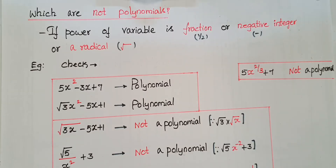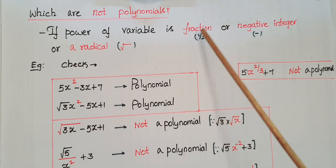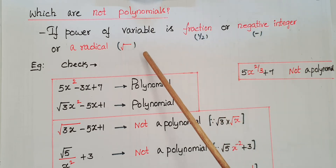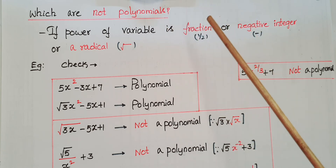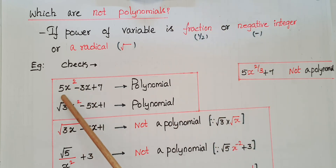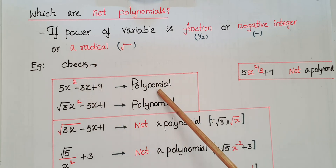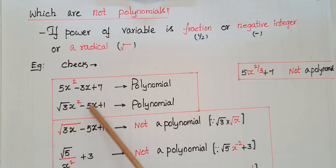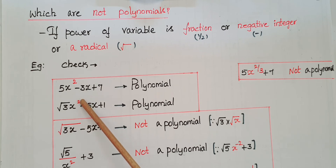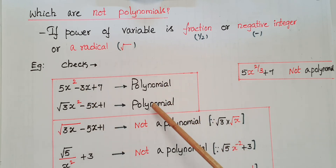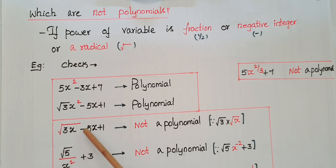Now I am going to tell which are not polynomials. We know that the degree of a polynomial variable should be a whole number. If the power of the variable is a fraction, negative integer, or a radical, then it is not a polynomial. For example, 5x square minus 3x plus 7 has degree 2, which is a whole number, so it is a polynomial. Root 3 times x square minus 5x plus 1 also has x with power 2, a whole number, so it is also a polynomial.